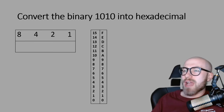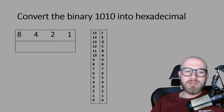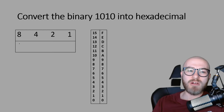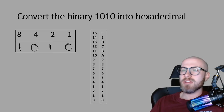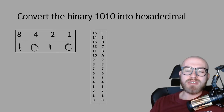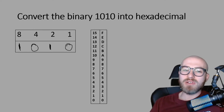Let's do an example of how to convert from binary into hexadecimal. Convert the binary 1010 into hexadecimal. We write our binary number into a mini conversion table with only a nibble of binary information: 1, 0, 1, 0. We add up everywhere there's a 1, so we've got an 8 and a 2, which adds up to 10. So this is the binary for 10, but it's the hexadecimal for A.